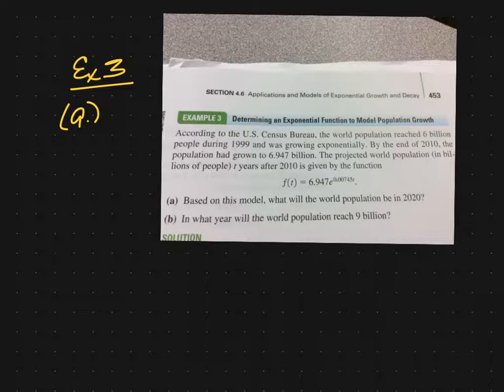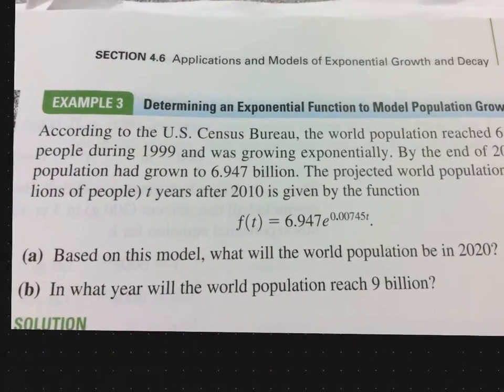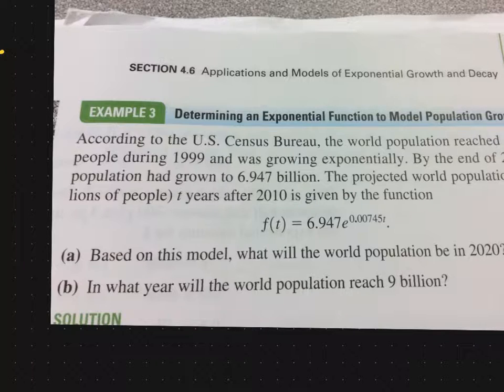That problem says this: according to the U.S. Census Bureau, the world population reached 6 billion people in 1999 and was growing exponentially. By the end of 2010, the population had grown to 6.947 billion. The projected world population in billions of people, two years after 2010, is given by this function here: f(t) equals 6.947e to the .00745t.